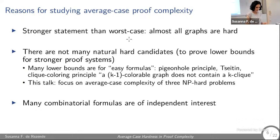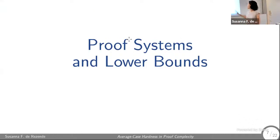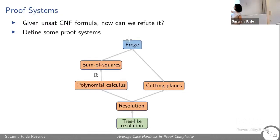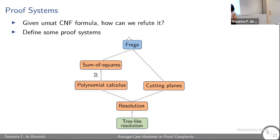Let me define the proof systems I'll discuss. There's a hierarchy where stronger proof systems have more succinct proofs. These include tree-like resolution, resolution, polynomial calculus (defined over any field), sum of squares (stronger only over the reals), and cutting planes. We know how to prove lower bounds for several of these, but not for the strongest ones.